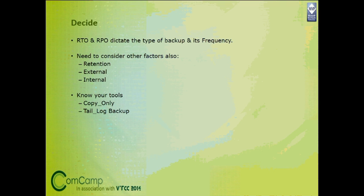In order to shorten your recovery time, you can include different types of backups like differential backups, which will shorten the restore process. Recovery Point Objective dictates what type of backups you should take and how much data loss you can afford. For a mission-critical application, if you only take full and differential backups, you cannot take a differential backup every single moment — as time passes, the differential backup grows in size and takes longer to complete.